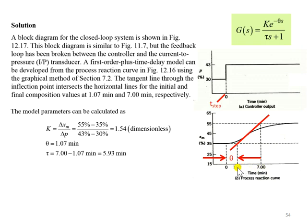The time taken from 1.07 to 7 minutes can be estimated as the time constant. We can calculate tau equivalent to 7 minus 1.07 minutes, which is equivalent to 5.93 minutes.